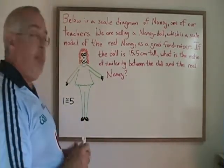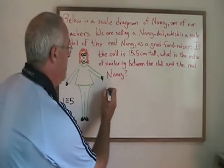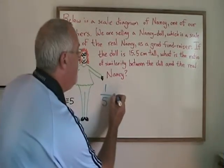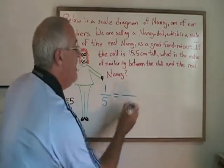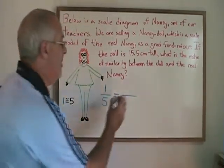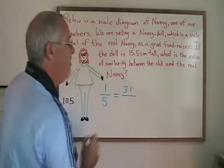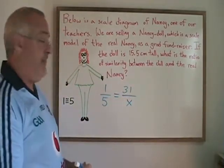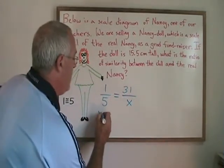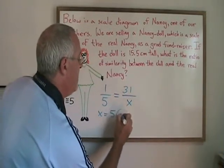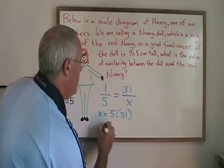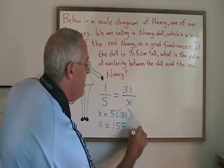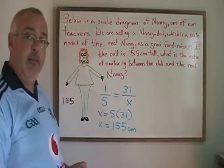So I can take my 1 to 5 scale and start building a proportion. One ruler over 5 real is equal to the 31 centimeters I got with the ruler on top, over x on the bottom — ruler over real. When I simplify, I get x equals 5 times 31, which means x is equal to 155 centimeters.